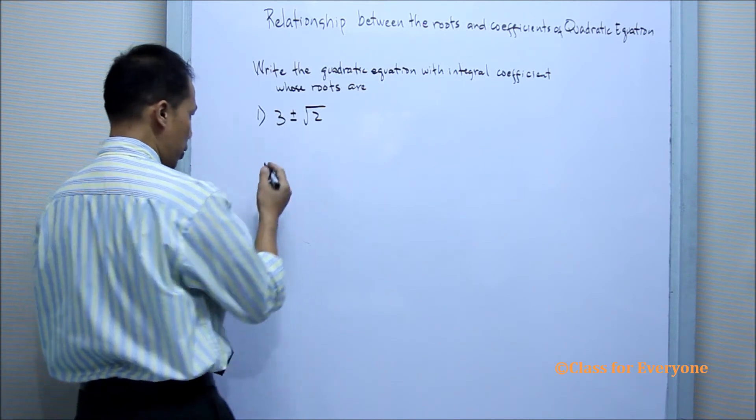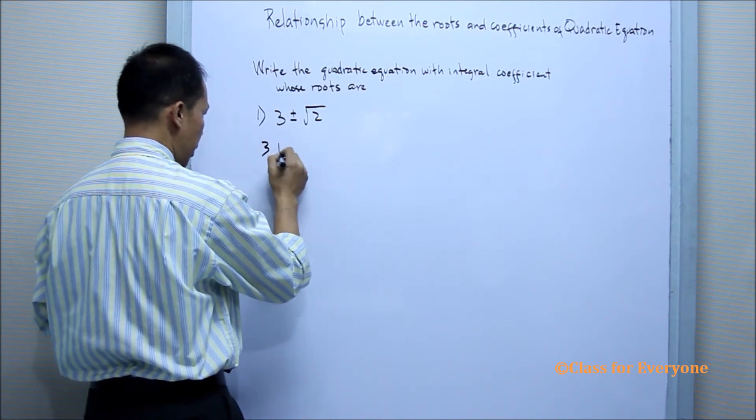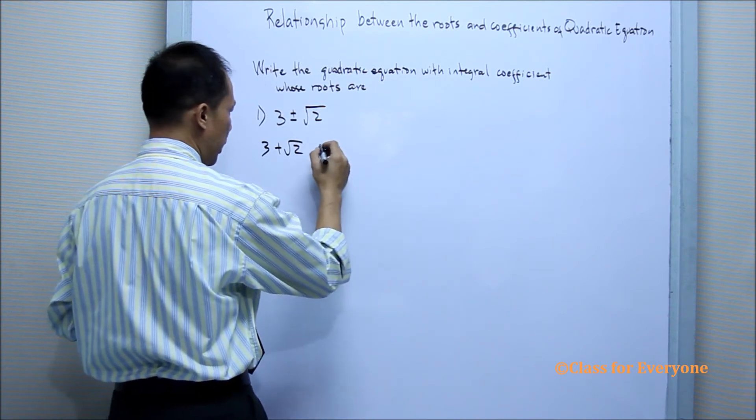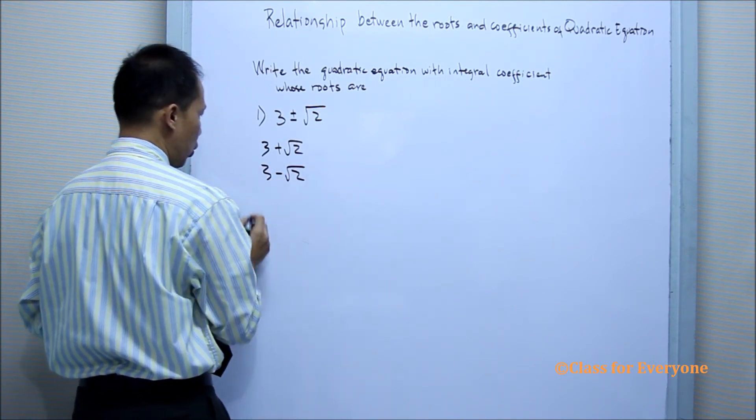Since we have two roots, the first root will be 3 plus the square root of 2, and the other root will be 3 minus the square root of 2.